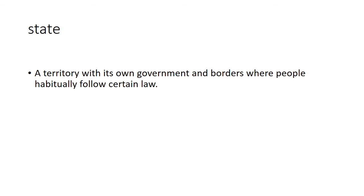Hello guys, today we are going to learn some basic terminologies of politics. The first one is 'state.' State is a territory with its own government and borders where people habitually follow certain laws. It is a geographical territory where a certain population is living, having their own sovereign and their own government, and those people are following the law — not because anyone bound them, but by their own will.